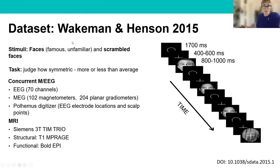I'll start by reminding you of the dataset we'll be using today. We're looking at the Wakeman and Henson dataset that was published in 2015. Participants were presented with faces and scrambled faces, and they were asked to judge how symmetric the faces were. During this task, concurrent M and EEG were recorded, and we also have EEG electrode locations and scalp points registered using a Polhemus digitizer. We also have a structural MRI as well as functional MRI from the same task.